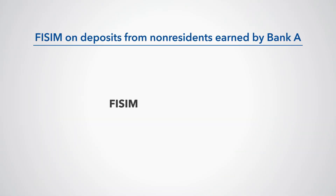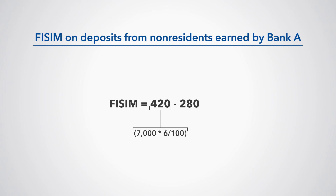Under this scenario, FISIM on deposits from non-residents earned by Bank A is calculated as pure interest payable, 420, minus actual interest payable, 280, which equals 140.